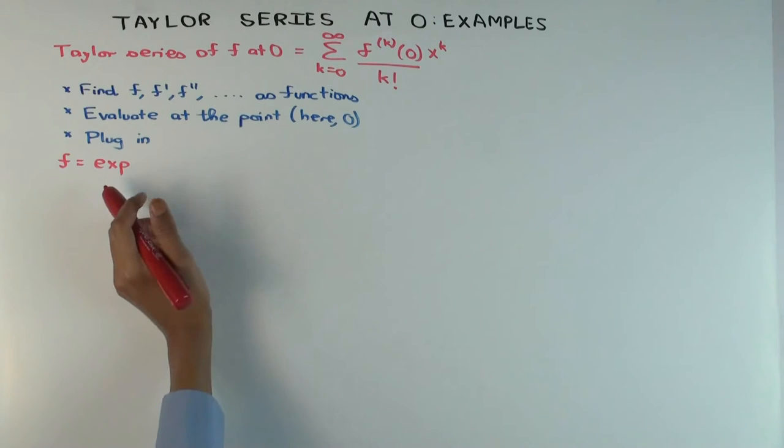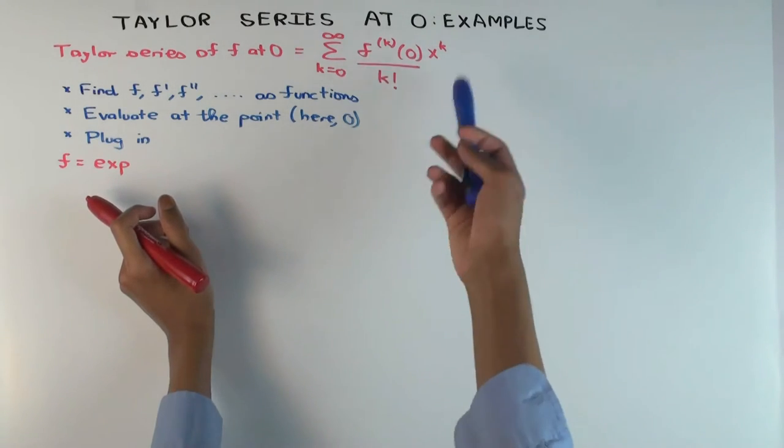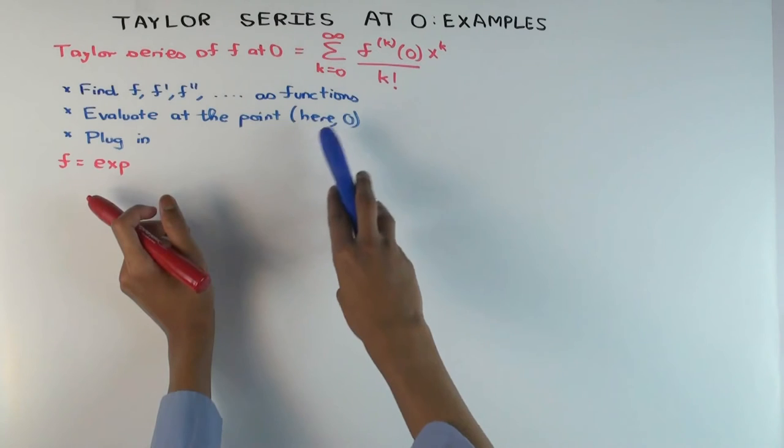Now the procedure is as follows: you first find all the derivatives of the function - the first derivative, second derivative and higher derivatives as functions. Then you evaluate all of them at the point. We are doing Taylor series at zero for our examples, though the same method would work at other points, but we are just doing at zero for simplicity.